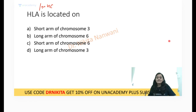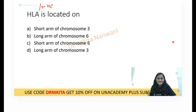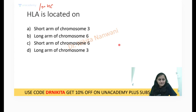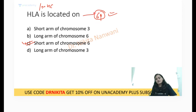Good work to Shubham, Desai, Dr. R, Kritika, Sayyash — my Plus subscriber students. The answer is the short arm of chromosome 6, that is 6p. HLA is located on 6p. Please remember that.